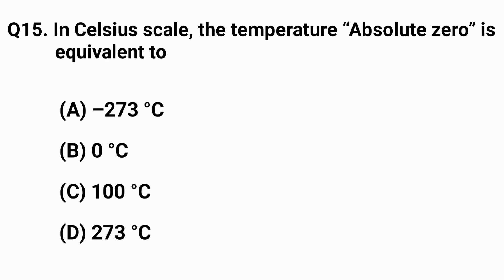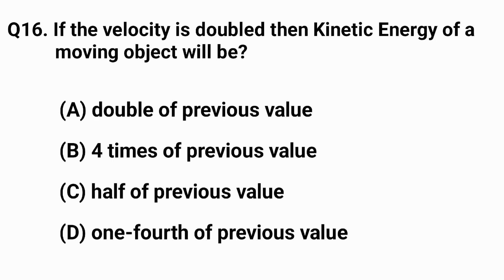Question number fifteen: on the Celsius scale, the temperature at absolute zero is the right answer is option A. Question number sixteen: if the velocity is doubled, then the kinetic energy of a moving object will be the right answer is option B — 4 times the previous value.